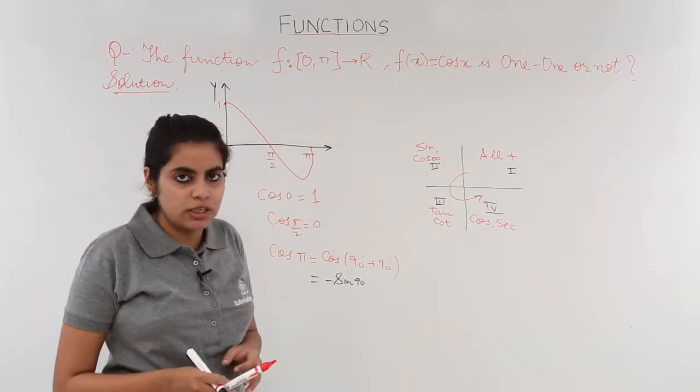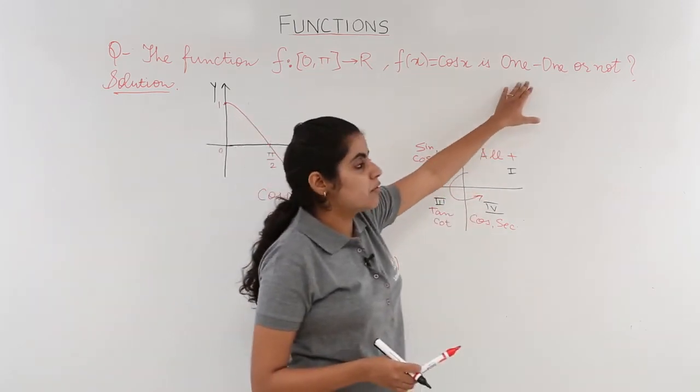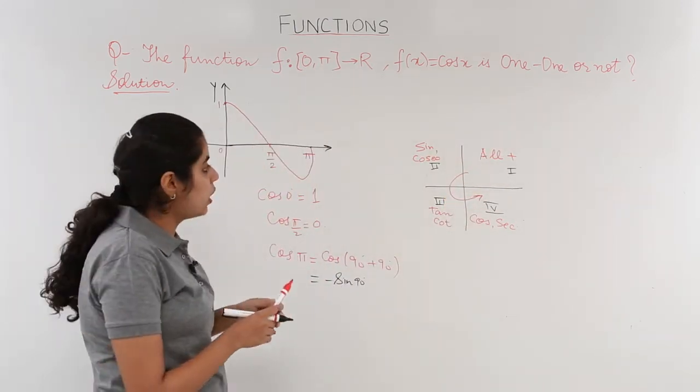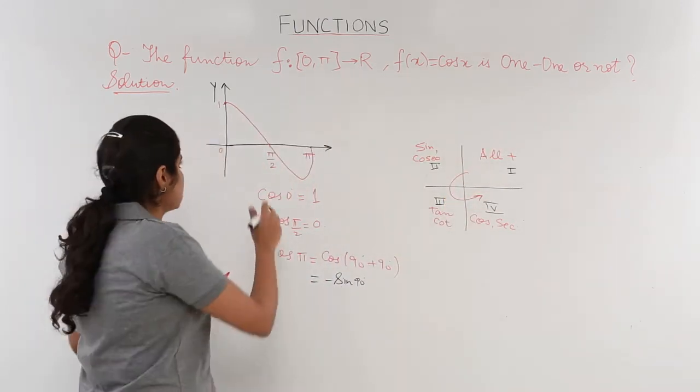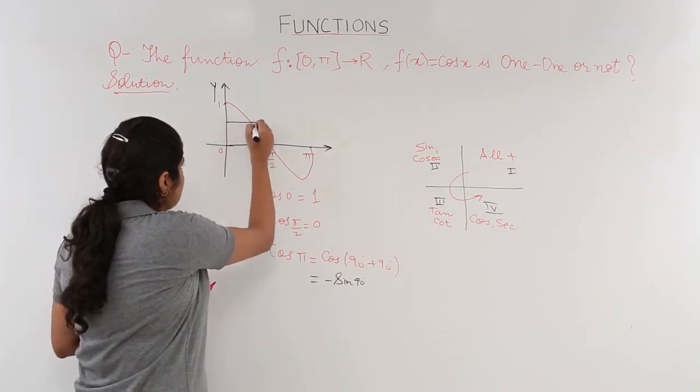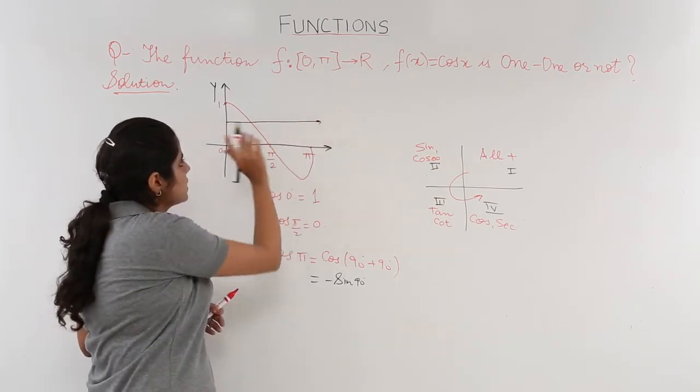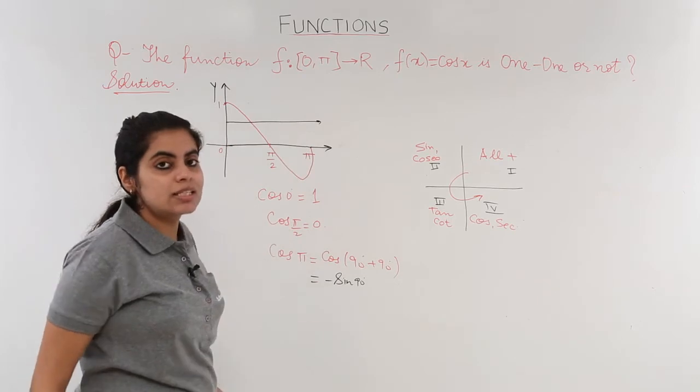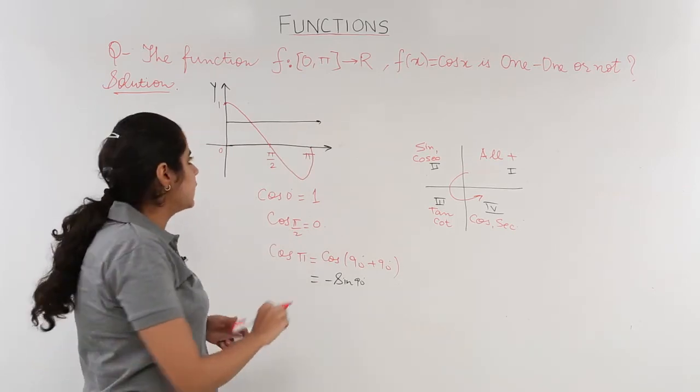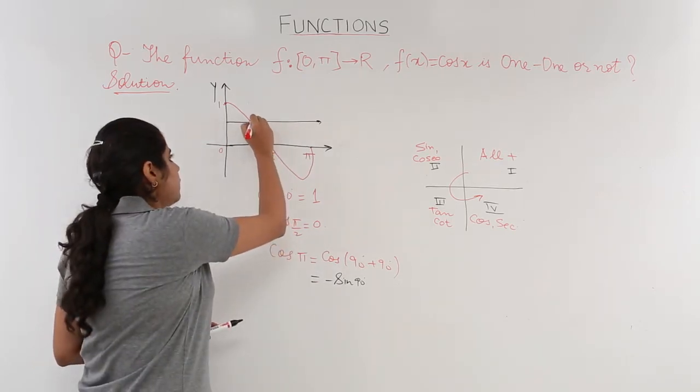Now what I want to show you here is we want to check whether it is one-to-one or not. So we draw a line parallel to the x-axis. Now this line cuts the graph at how many points? It cuts the graph at only one point.